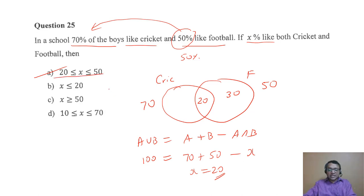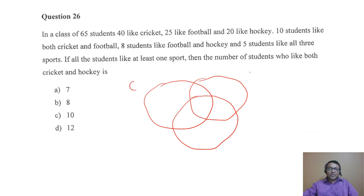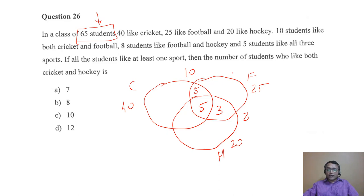There will always be easy and tough sums — the key is to pick up the easy ones. This next question is a three-variable Venn diagram. Whenever you have three variables it makes sense to draw the Venn diagram. There are 65 students total: 40 like cricket, 25 like football, 20 like hockey, 10 like both cricket and football, 8 like both football and hockey. Always look at data you haven't yet used — that's a hint. Not football = 65 − 25 = 40.